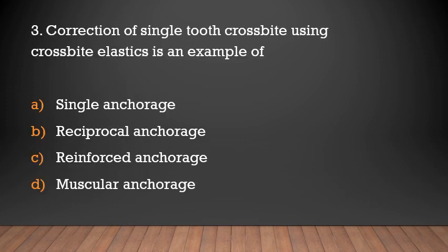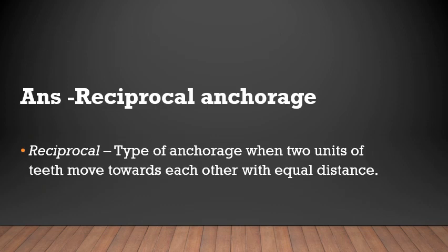Connection of a single tooth using cross-pipe elastics is an example of: single anchorage, reciprocal anchorage, reinforced anchorage, or muscular anchorage? The answer is reciprocal anchorage. In reciprocal anchorage, two units of teeth move towards each other with equal distance.